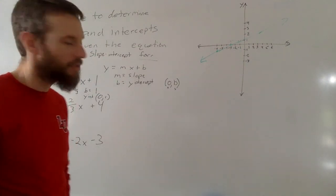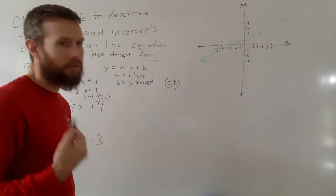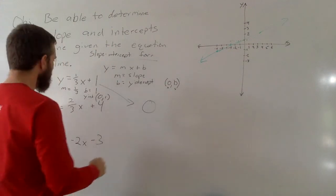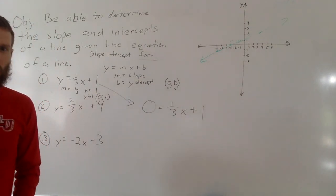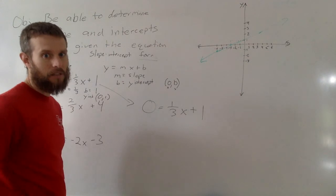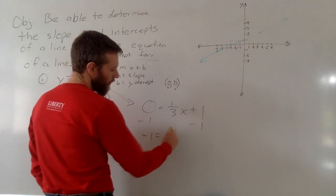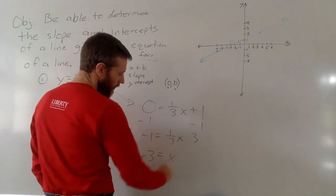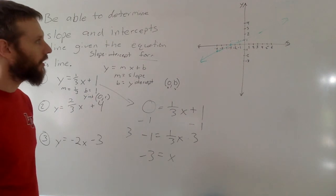However, again, without graphing this, we can still find out the piece of information very easily. We just put in 0 for y. So we'll take this equation, and we'll put in 0 instead of y, and solve for x. 0 equals 1/3 x plus 1. And by finding out what x is, we'll find out if y is 0, what's x. That's going to be, again, our x-intercept. So I'm going to subtract 1 from both sides. I get negative 1 equals 1/3 x. And I multiply both sides by 3. And I get negative 3 equals x. So again, when y is 0, x is negative 3. And that is our x-intercept.